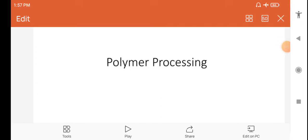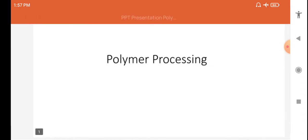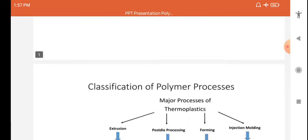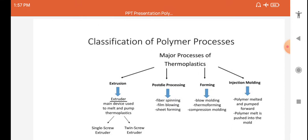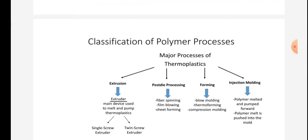Welcome back friends, we are seeing the subject manufacturing process. In this process, the unit of polymer processing we are now studying. Polymer processing classification of polymer processes, major processes of thermoplastics are as given below: extrusion,